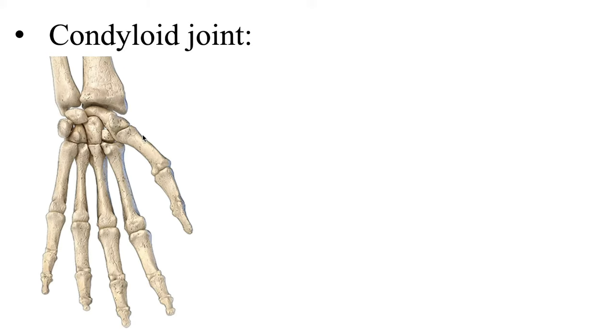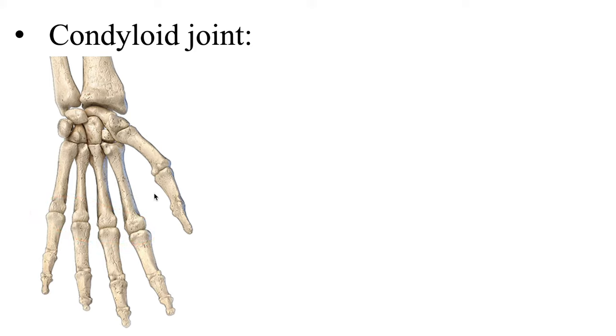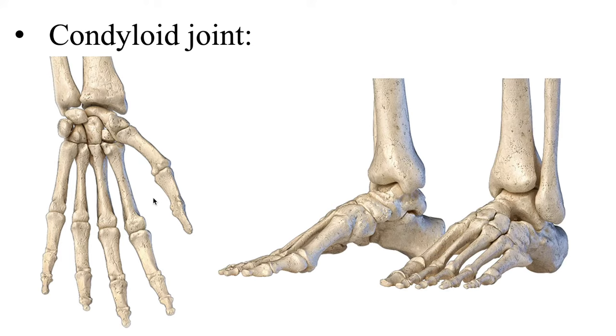Next, we have the condyloid joint — formed when an oval-shaped surface fits within an ellipsoid socket or cavity, which is why it is also known as an ellipsoid joint. For example, we have the radial carpal joint, where the distal end of the radius creates an ellipsoidal socket that meets the proximal carpals, as well as the metacarpal phalangeal joints and the metatarsal phalangeal joints, where the metatarsals meet the proximal phalanges.